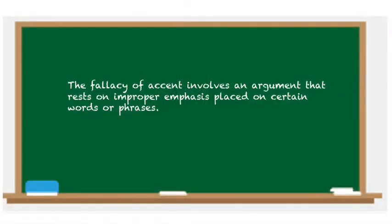We come back now to our final two fallacies. The last two are in this category: the fallacies of clarity. We're going to take a look at accent and distinction without a difference. The fallacy of accent involves an argument that rests on improper emphasis placed on certain words or phrases, and we're going to see a couple of examples of this.